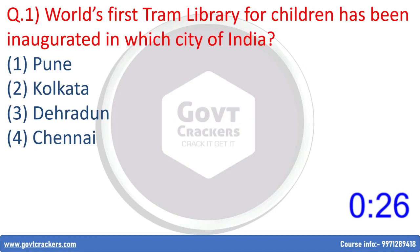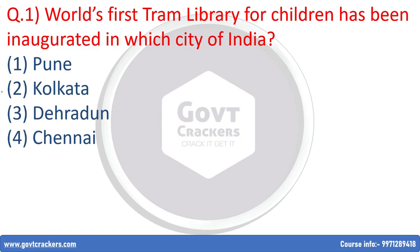First question: The world's first tram library for children has been inaugurated in which city of India? Option 1: Pune, Option 2: Kolkata, Option 3: Dehradun, Option 4: Chennai. The correct answer is Option 2, Kolkata. On the occasion of Children's Day, the world's first library on a tram for children was launched in Kolkata, West Bengal, on 14th November 2020. The Kolkata Young Readers Tram Car is the world's first such tram library.